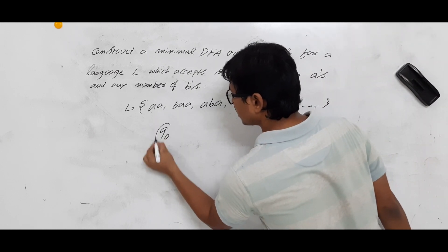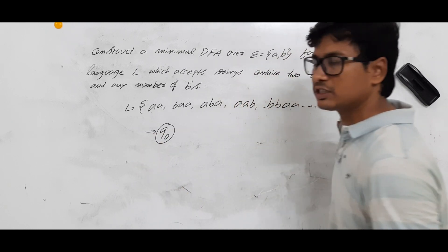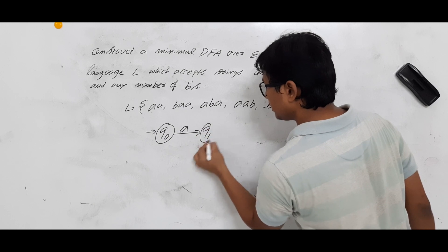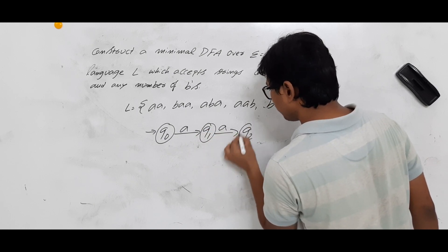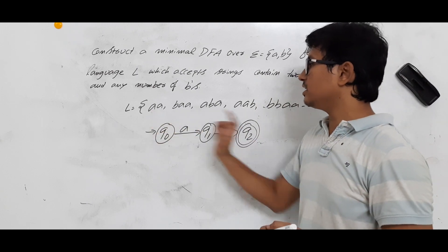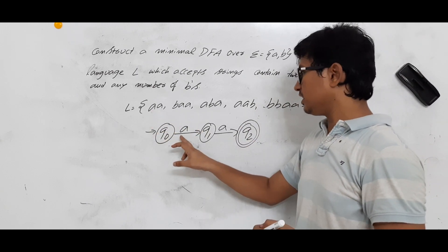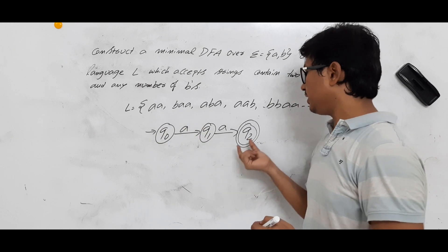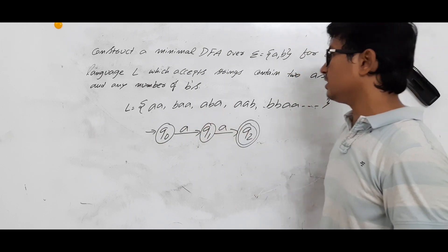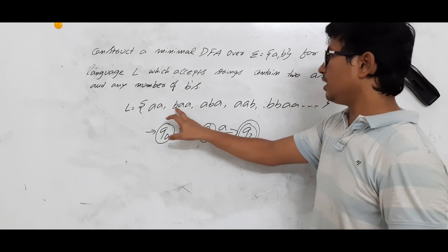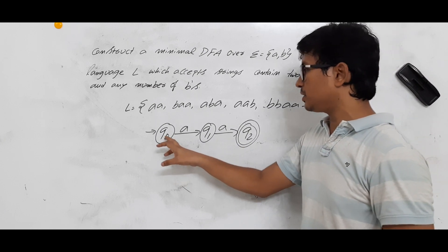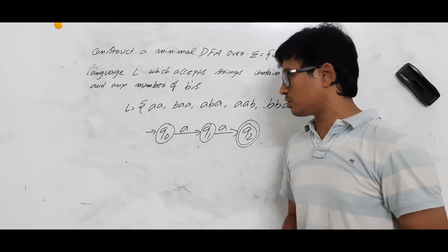The smallest string is AA. Let me construct the DFA for AA. I take the initial state as Q0. On taking input A and then A, I have to reach the final state Q2. From the initial state by taking input AA I reach the final state Q2, so AA is accepted. Now Q0 is not finished because on input B we have not defined a transition yet.